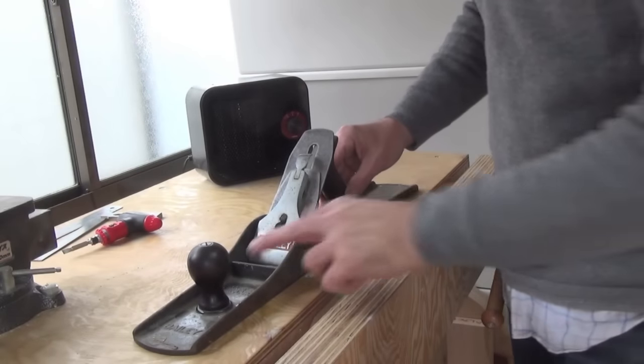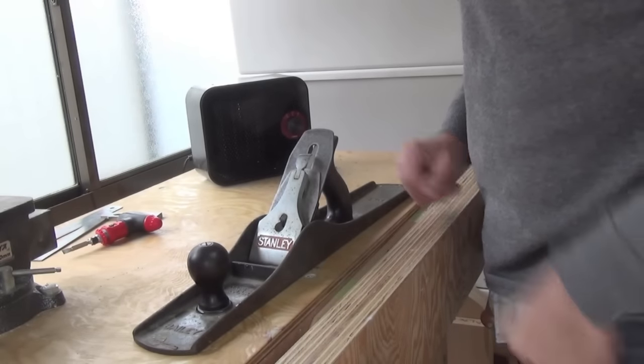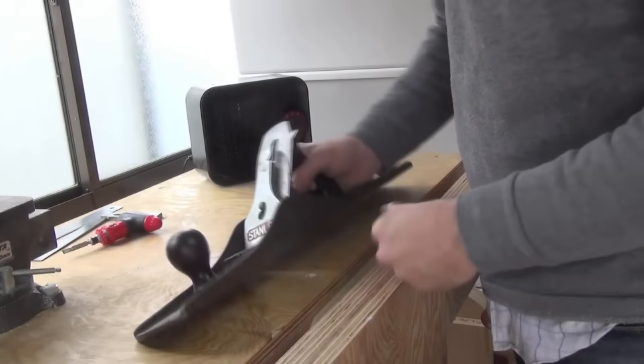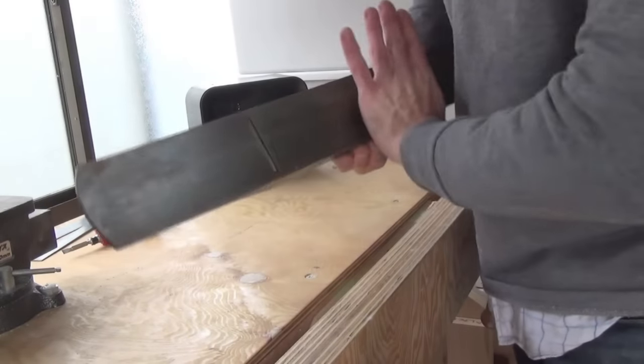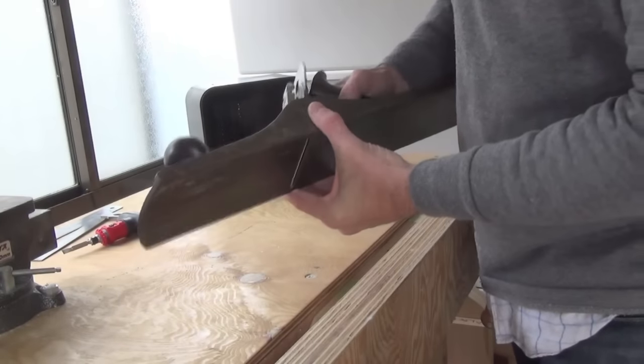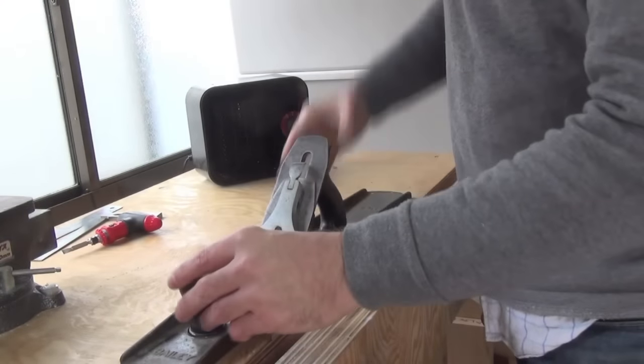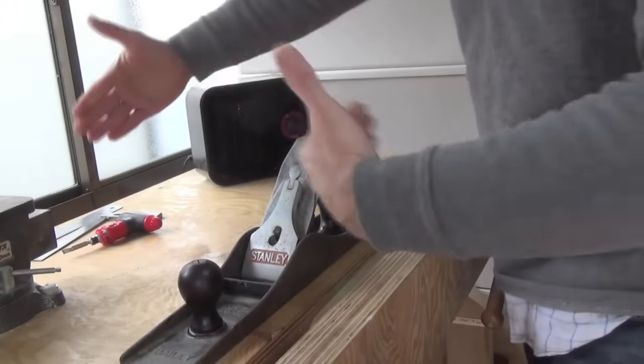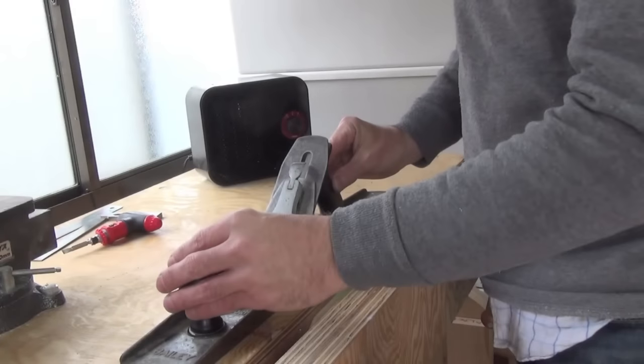This type of plane is variously described as a jointer or joiner plane. Long planes like this were used for smoothing large panels and for doing the edges of two pieces of wood that are going to be joined together.